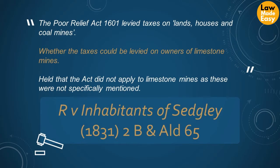In the case of R against Inhabitants of Sedgley, the Poor Relief Act 1601 levied taxes on lands, houses and coal mines. The court considered whether the taxes could be levied on owners of limestone mines. The court held that the act did not apply to limestone mines as these were not specifically mentioned.